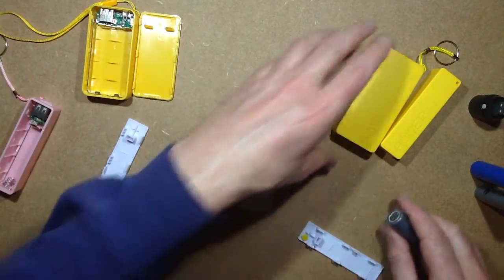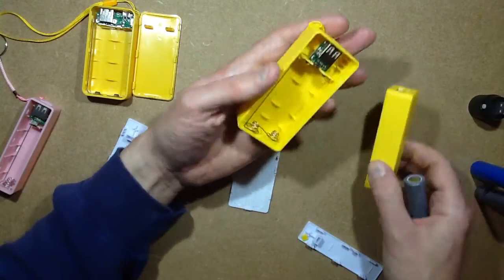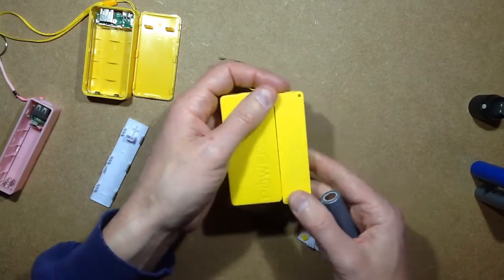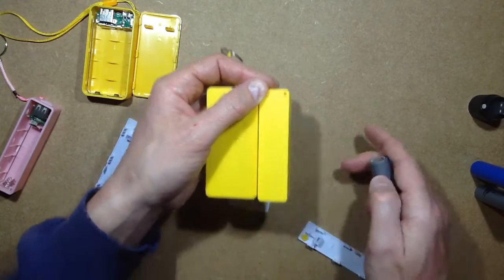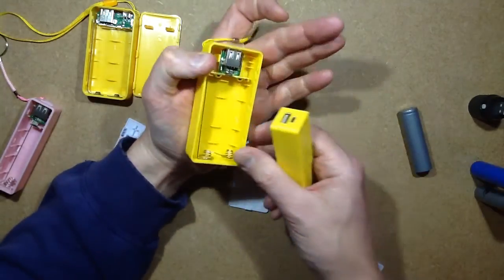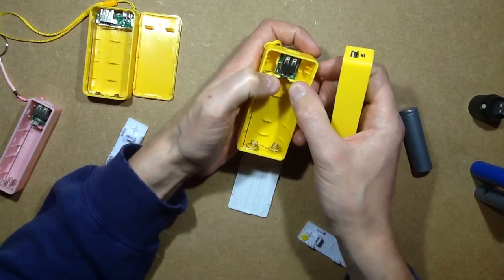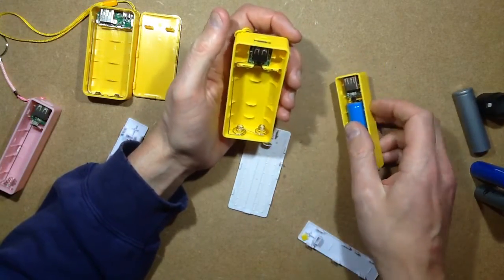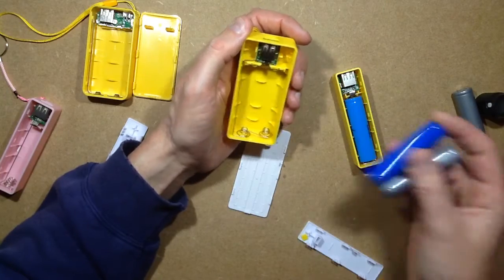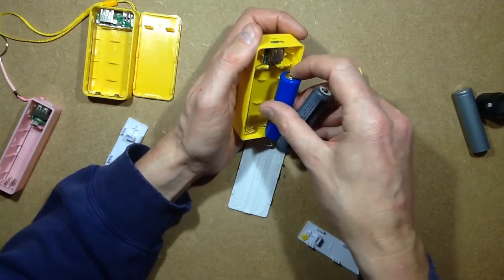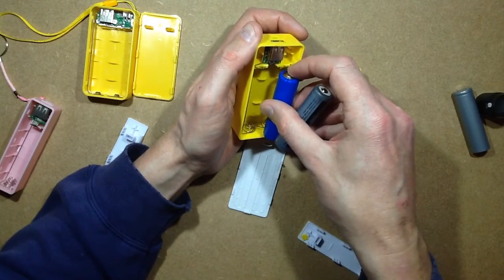This one, on the other hand, is very similar to this case—it's even got the same style of text on it. This one does have much better battery support, and again, sadly we can't put the protected cells in. They just won't fit; it's just too tight.